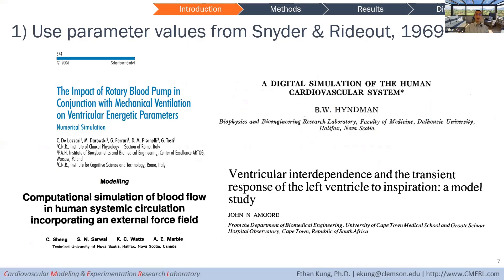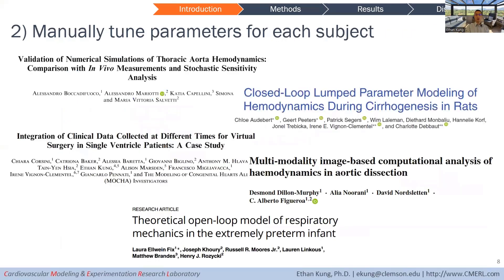A lot of studies use values directly from a paper by Snyder, published in 1969, where the parameters were tuned based on one single subject. A second approach is manual tuning, which my group and collaborators have used a lot in the past. This works pretty well, except it requires a lot of expertise and time — it often takes a grad student over a week to tune one case.